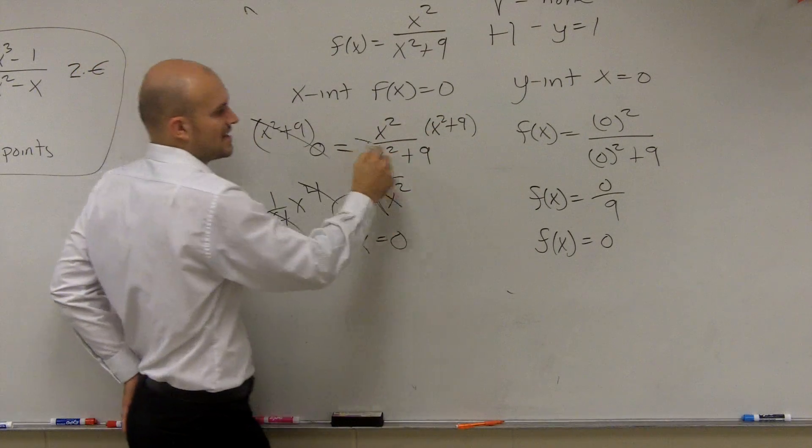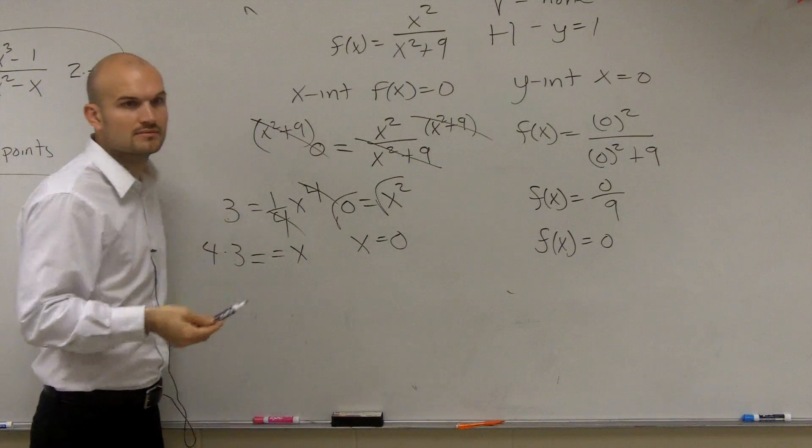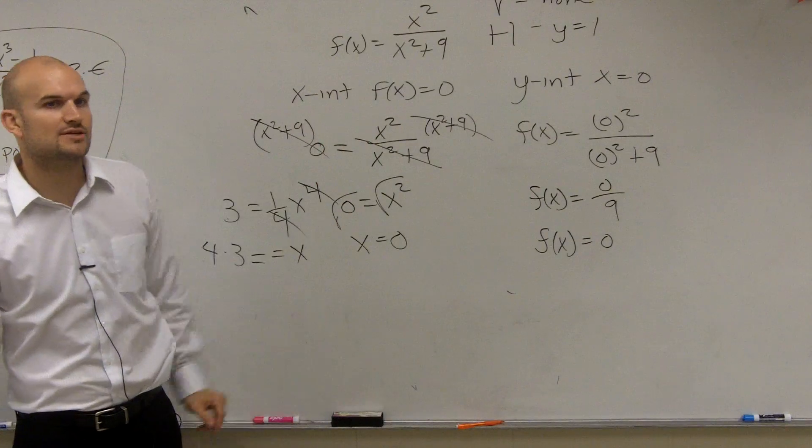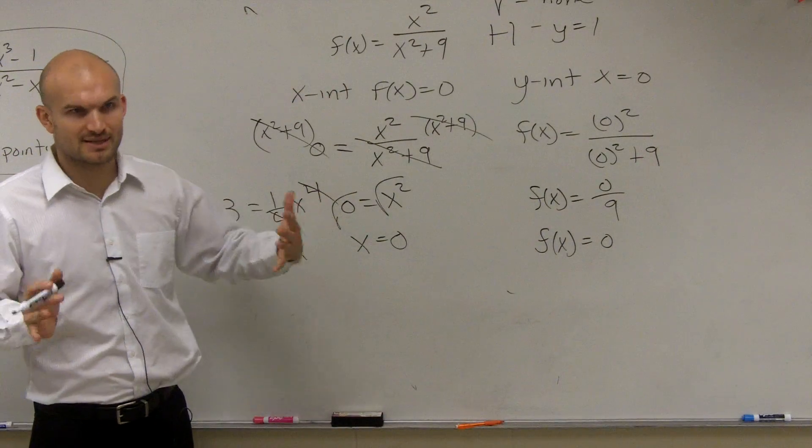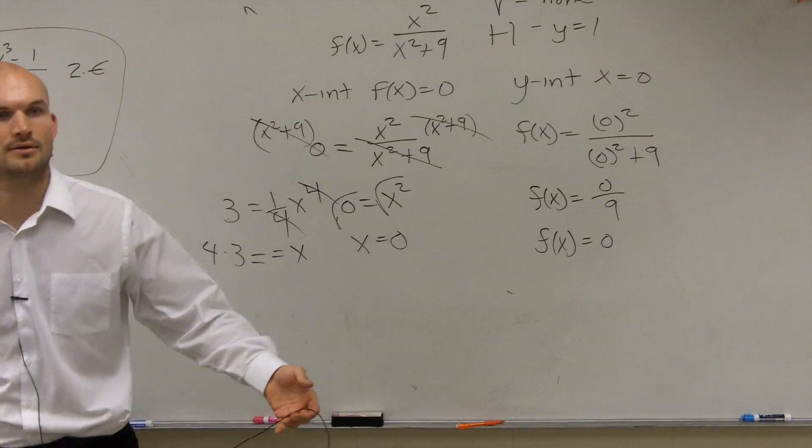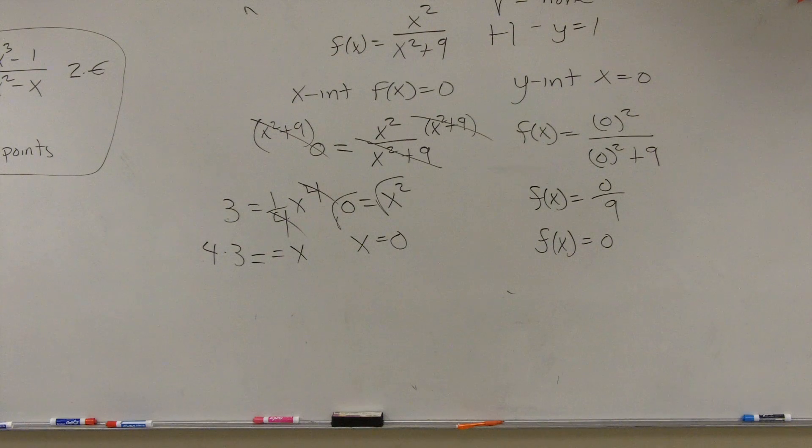1. So it just goes down to 1, so we're just left with the x squared. OK? So whenever you have something on the denominator, that's what you want to multiply by. OK? And just make sure you do it on both sides. Cool?